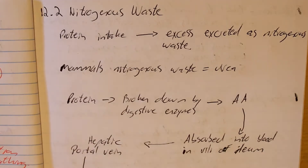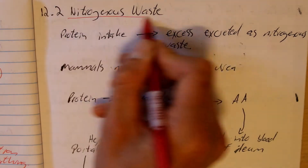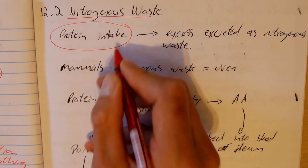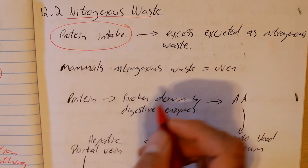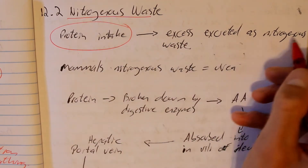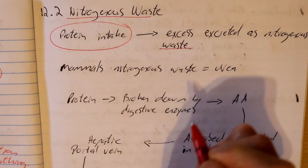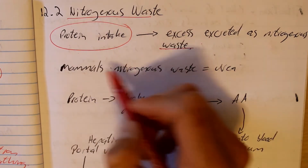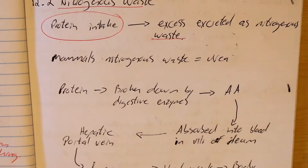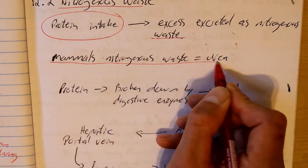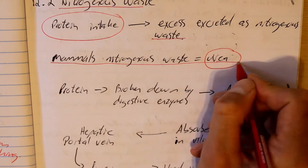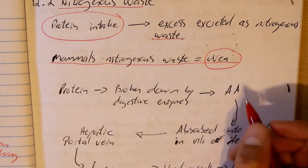So, what is nitrogenous waste? How do mammals get rid of nitrogenous waste? Well, we take in protein in our diet, and the excess is excreted as nitrogenous waste. Thus, nitrogenous waste is a product of our protein intake. In mammals, nitrogenous waste gets converted to a product called urea, which is non-toxic.